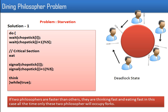The second problem is starvation. Let's say two philosophers are very fast — they will eat, put their forks back on the table, and again pick the forks. If these two philosophers are faster compared to the other three, they will keep eating repeatedly while the remaining philosophers keep waiting. In computer terms, faster processes always occupy resources and other processes have to wait, causing starvation. So this solution is not good because we have both a deadlock and a starvation problem.